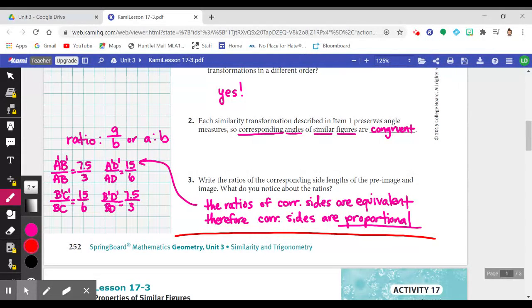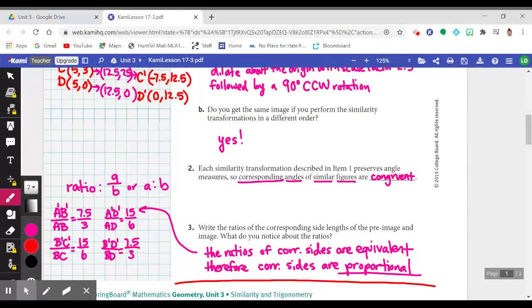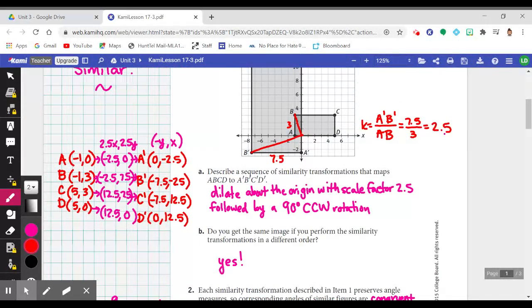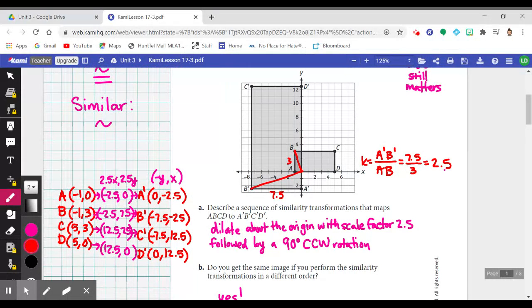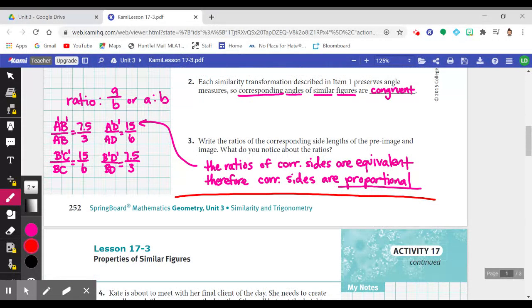Number two then says, each similarity transformation described in item one preserves angle measures. We saw that in Lesson 17-2 as well when we were playing with Geogebra, that the angles don't change. The corresponding angles do not change measures. We still have all 90 degree angles between these two rectangles. So we can make the bold statement that similar figures have corresponding angles that are congruent. The side lengths obviously change. The length of AB was three units. The length of A''B'' is seven and a half, but the angle A is congruent to A''.